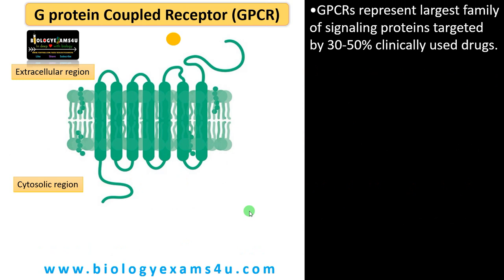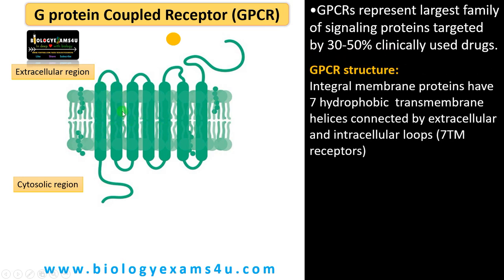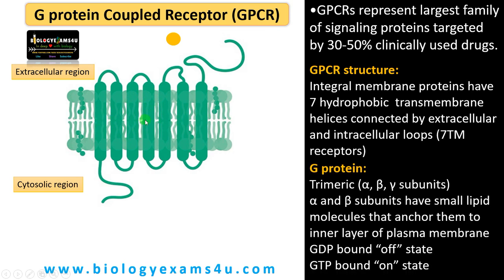The final type of receptor is the G protein coupled receptor. This is the most extensively studied receptor as it can respond to different types of signals or ligands. It represents the largest family of signaling proteins, targeted by 30 to 50 percent of clinically used drugs. This receptor is an integral membrane protein with seven hydrophobic transmembrane helices — one, two, three, four, five, six, seven — connected by three extracellular loops and three intracellular loops. This receptor is called G protein coupled receptor because it is associated with a protein complex called G protein.